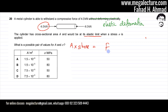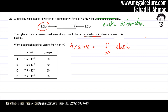I'm going to find the force that takes the cylinder to its elastic limit — this is the force after which plastic deformation begins. Since the cylinder can already withstand 4 kilonewtons, the force that reaches the elastic limit must be greater than 4 kilonewtons.